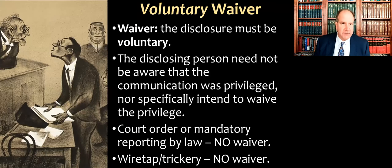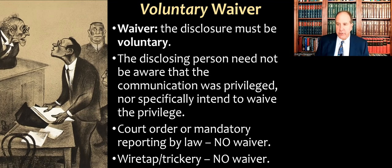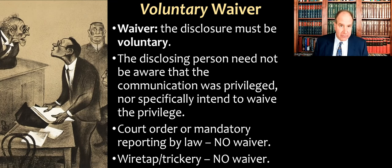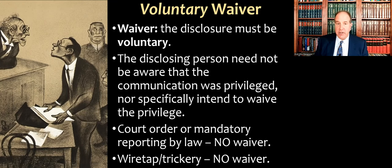This type of waiver has to be voluntary. By voluntary, we don't mean that your client understands all the rules of attorney-client privilege or knows that they're waiving it when they talk to their friends about what their lawyer told them. It just means that they made the statements voluntarily. So if there's a wiretap or you're tricked into making a disclosure, somebody breaks into your office or hacks your computer, privilege is not waived. If somebody's stealing your mail and intercepts some communications between you and your client, that's not a voluntary disclosure — so attorney-client privilege could still be asserted if someone tried to submit that information at trial.